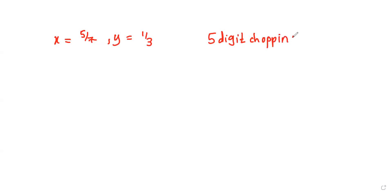Why is that calculator using five-digit chopping? Every calculator or computer you use is going to have limited storage. If you give an input of pi, it can't store those infinite digits, so the computer will cut off at some certain point. This is an old calculator, so it's going to chop after five digits.